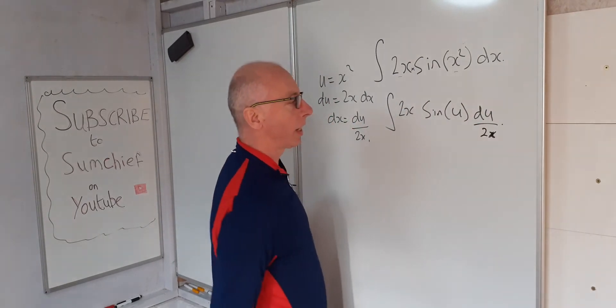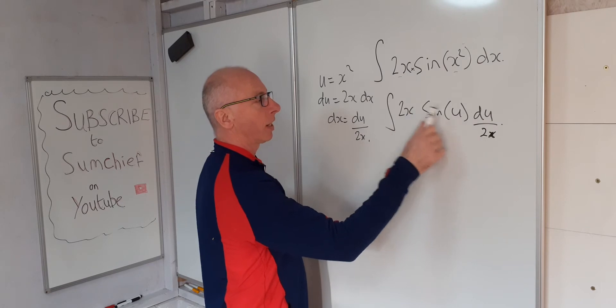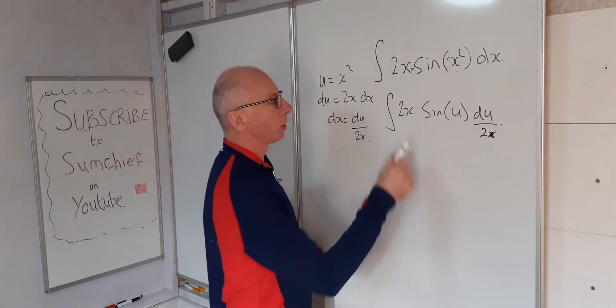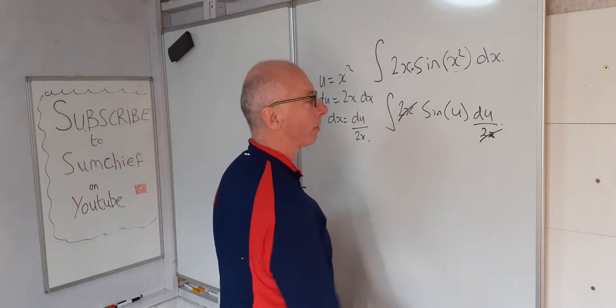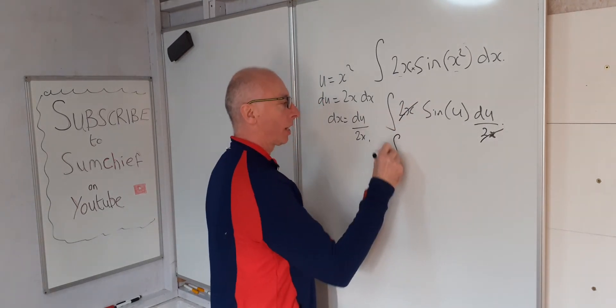Now x is not invited into the u world, but we've been clever here with the substitution. 2x and 2x can cross each other out.